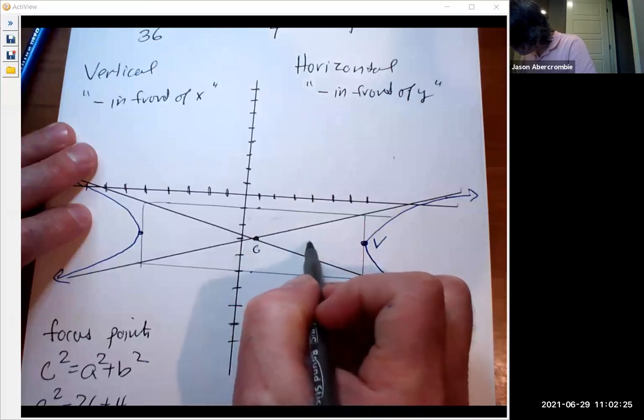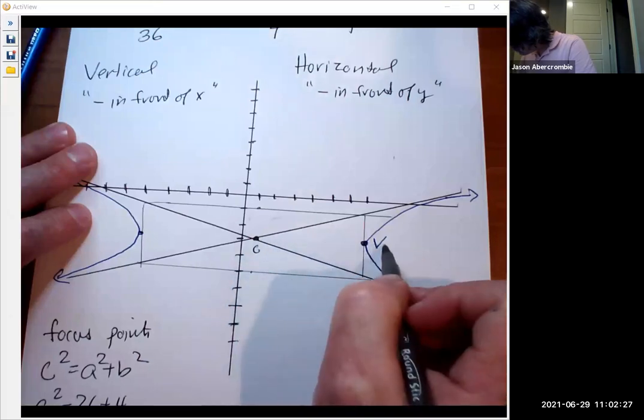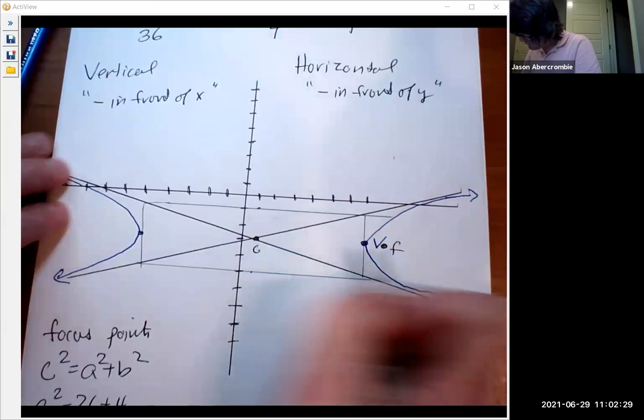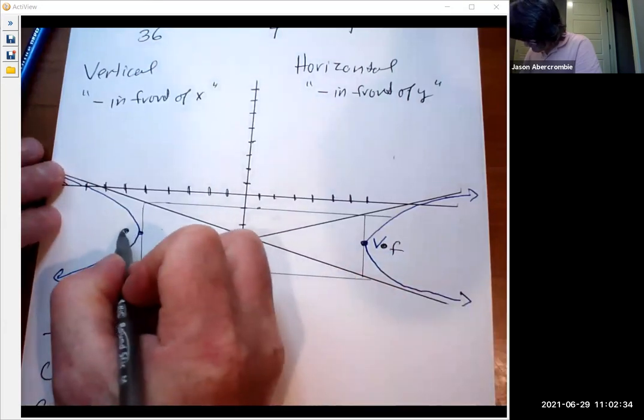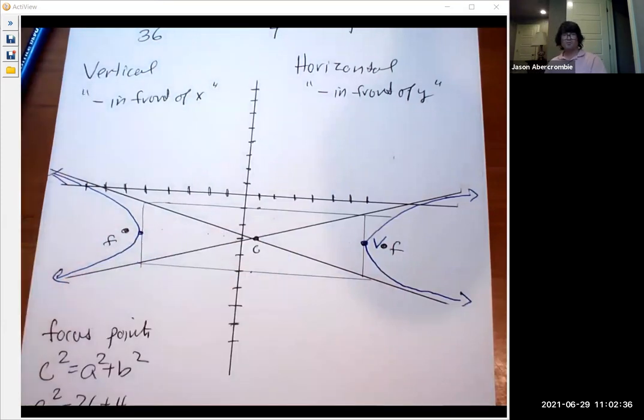1, 2, 3, 4, 5, 6. Maybe a half is right there. One, 2, 3, 4, 5, 6. Maybe a half is right there. So those are my focus points.